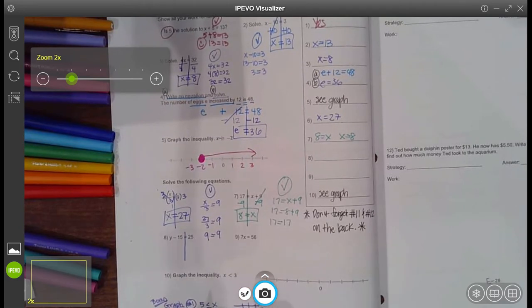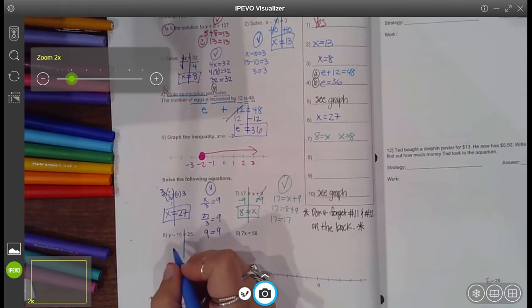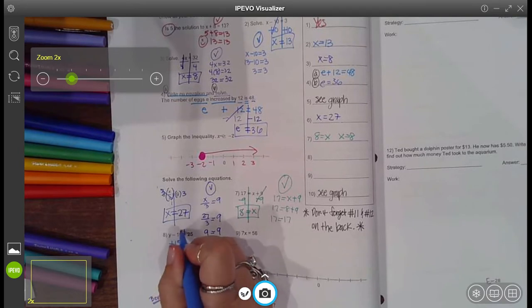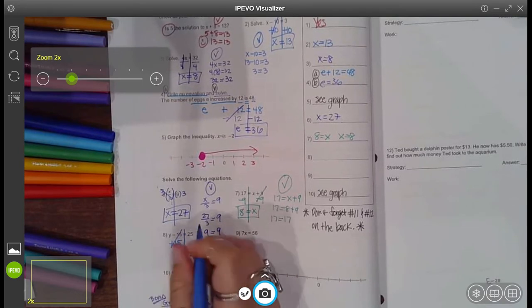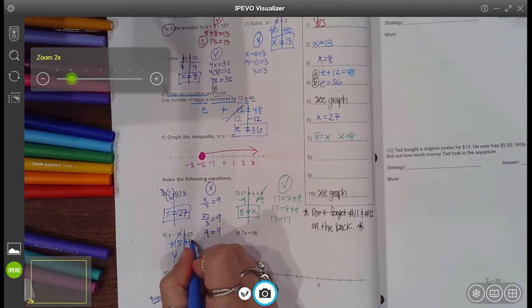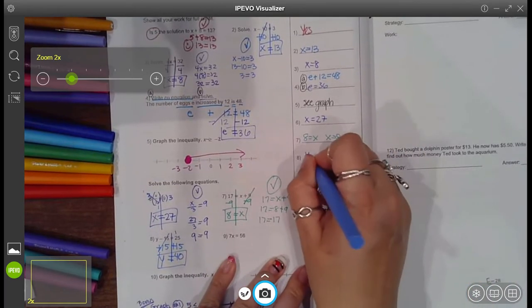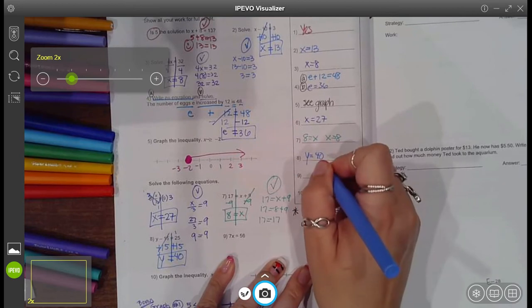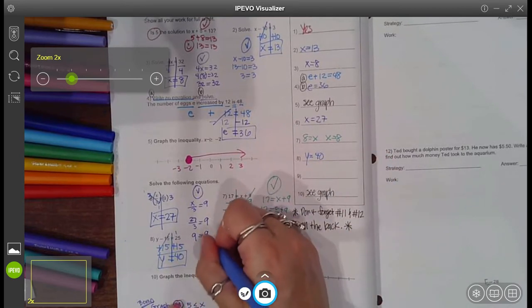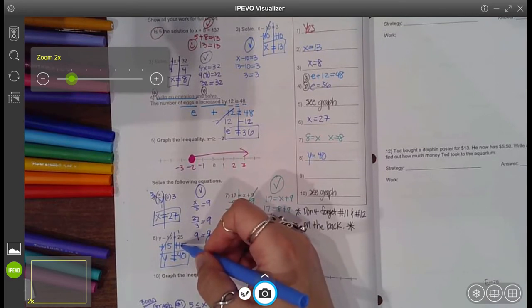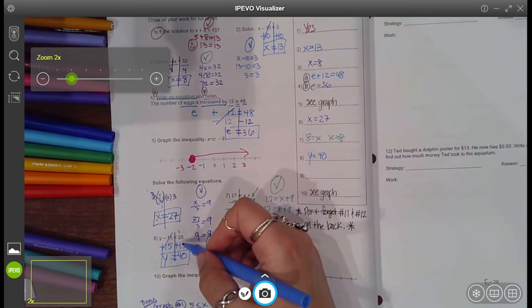Right here to get y by itself. What's the inverse of negative 15? To add 15. 15 minus 15 cancels. And you get y equals, well, add 15 to this side and you get 40. So in the answer column, I'm going to put y equals 40 or just 40. In order to check it, I'm going to actually pretend that I made a mistake. And what if I accidentally subtracted these and I got 10? Like yeah, 25 minus 15 is indeed 10.